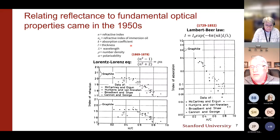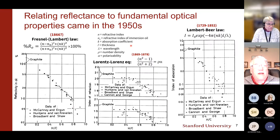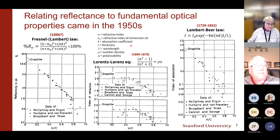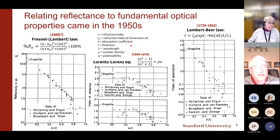Going back to the 1950s, people began examining the fundamentals of what causes refractive index, with roots even in the 1800s. The first key equation is the Lorenz-Lorenz equation. For absorbing materials, there is also an absorptive effect — applied to coal in the 1950s. The Fresnel-Lambert law has both refractive index and absorptive contributions, and data from that era confirms both contributions are relevant.